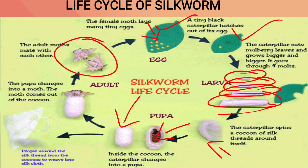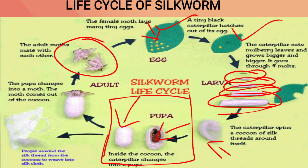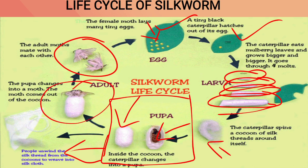To obtain silk, we harvest it at the cocoon stage. The animal is killed at this stage by placing the cocoon into warm water or an oven. After the animal is killed, we remove it and take out the cocoon, then straighten the fibers and use them for making silk. If we do not use the cocoon for silk, the animal develops inside and turns into an adult moth.